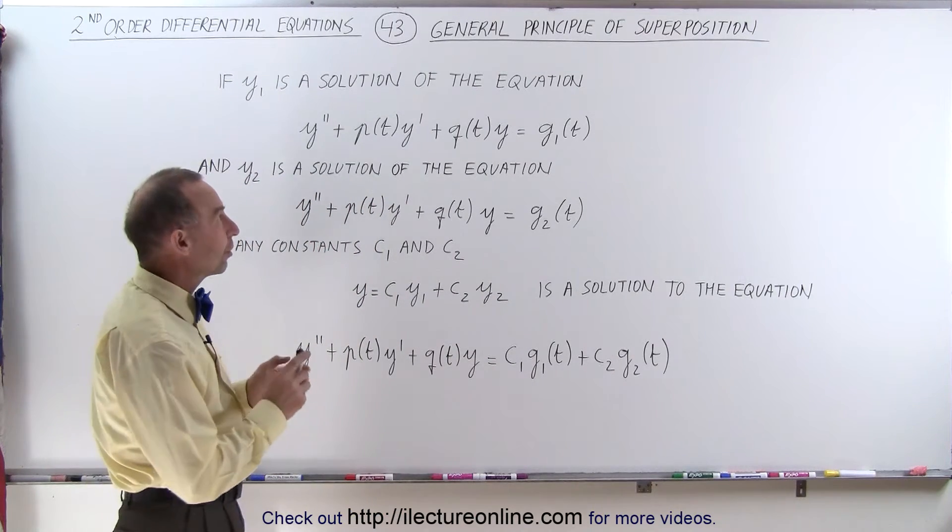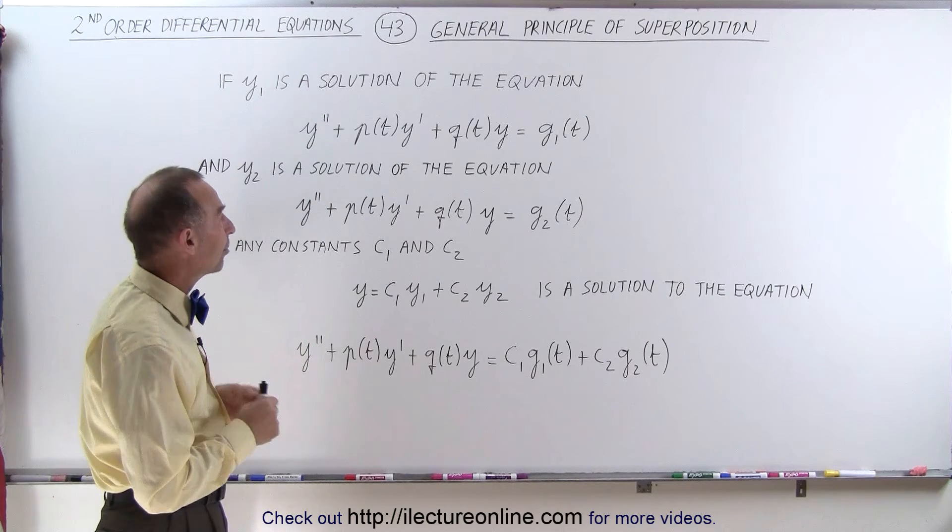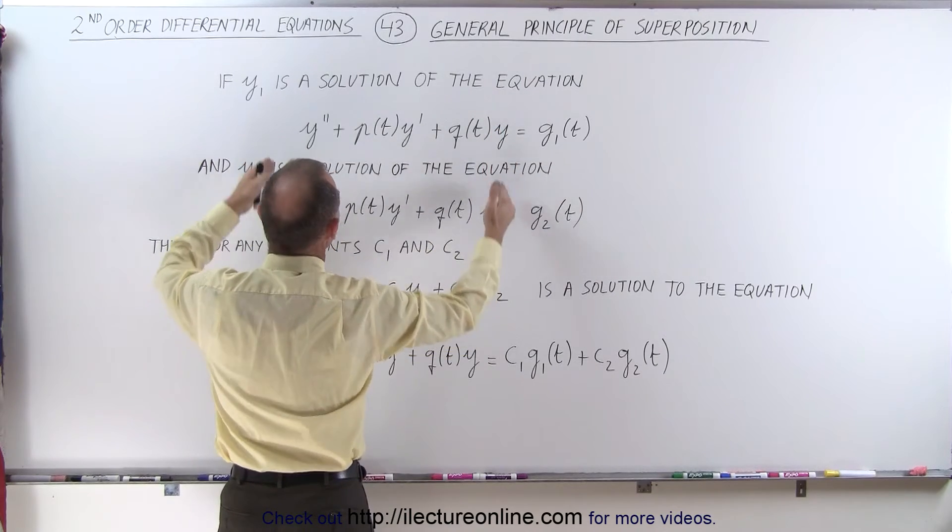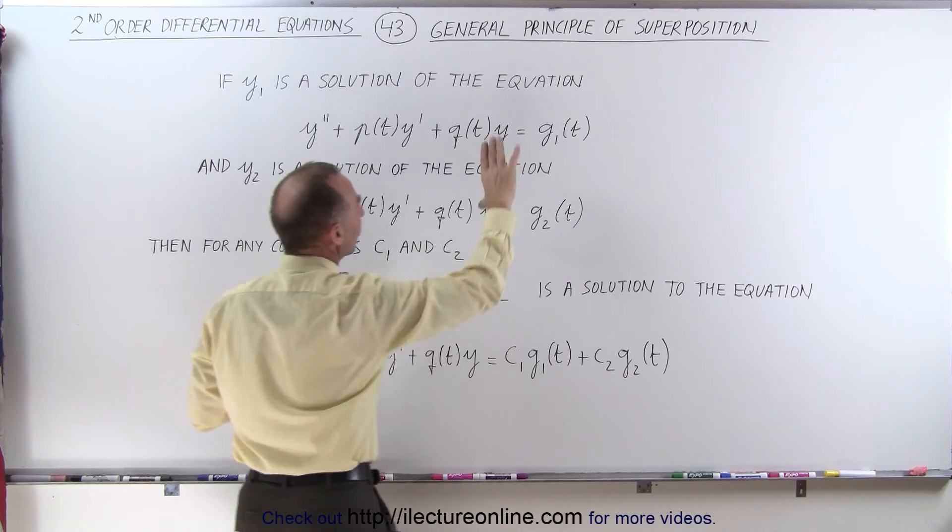we're going to employ something called the general principle of superposition. So let's say we have two separate differential equations. The left side is identical. Notice that these two differential equations have an identical left side, but the right side is different. They have different functions on the right side.